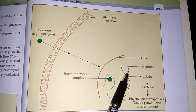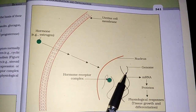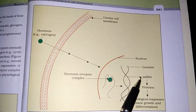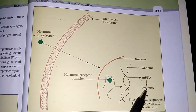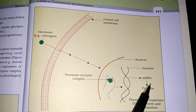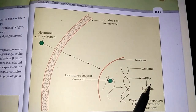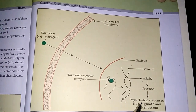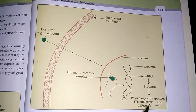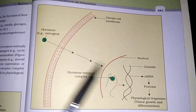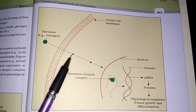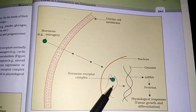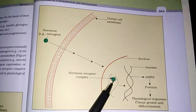Genome ke saath interact hoke DNA transcribe hoga into messenger RNA, and messenger RNA translation hogi, and now this protein particular function, physiological responses perform karega. So we have seen: hormone → cell receptor → hormone receptor complex → genome.